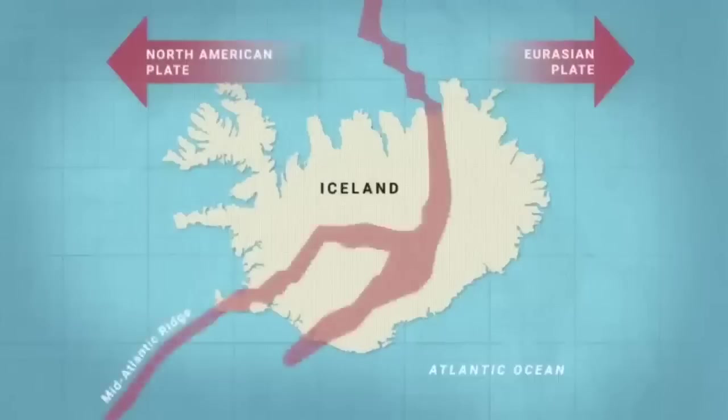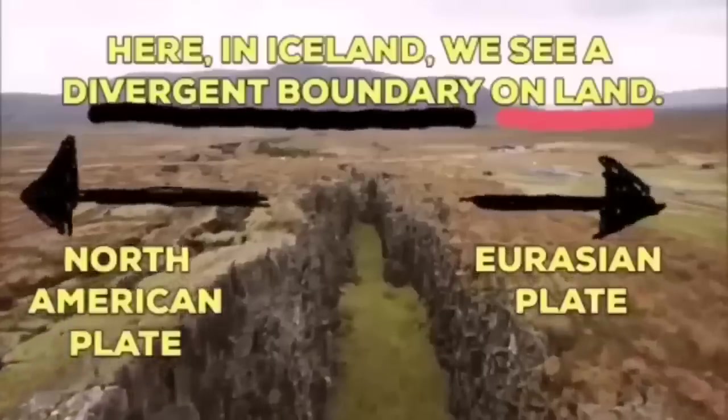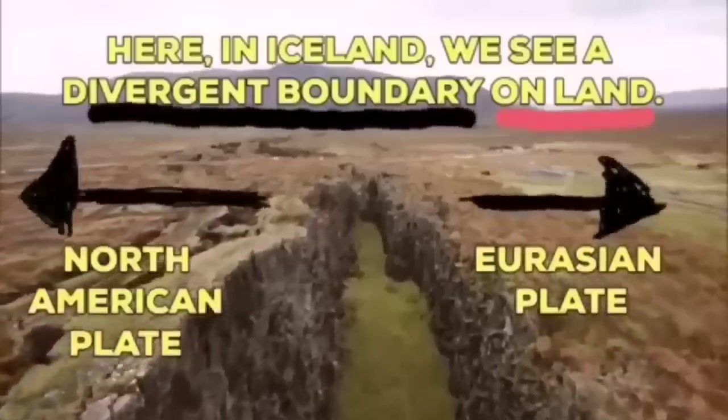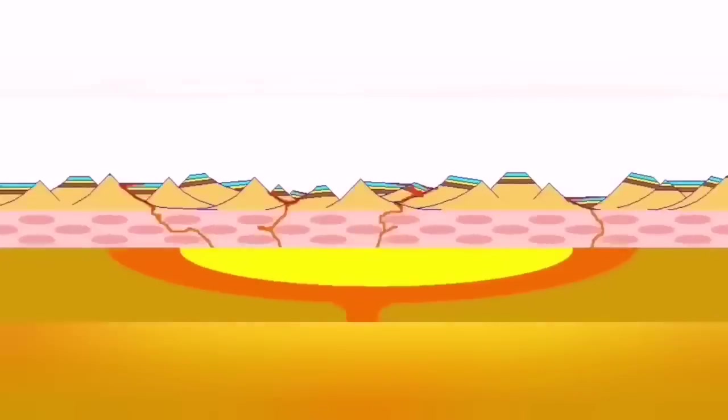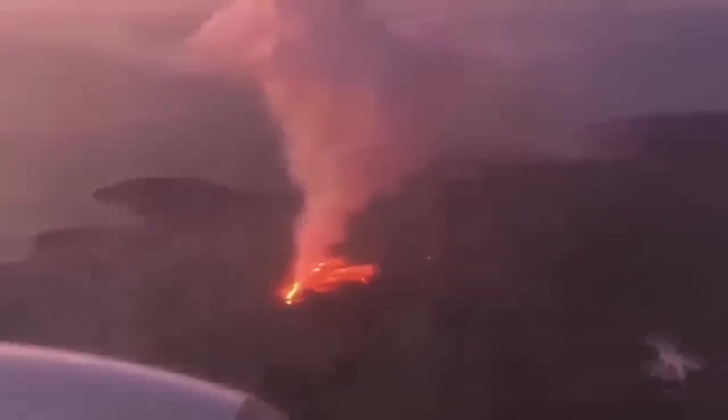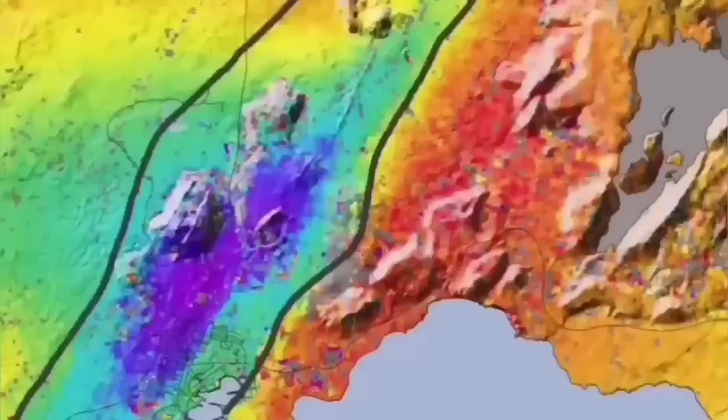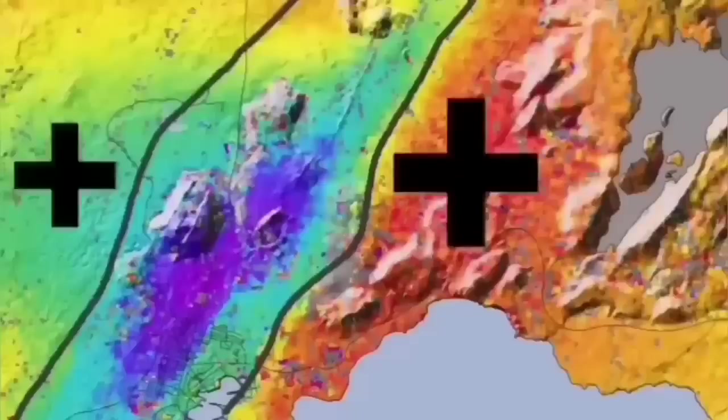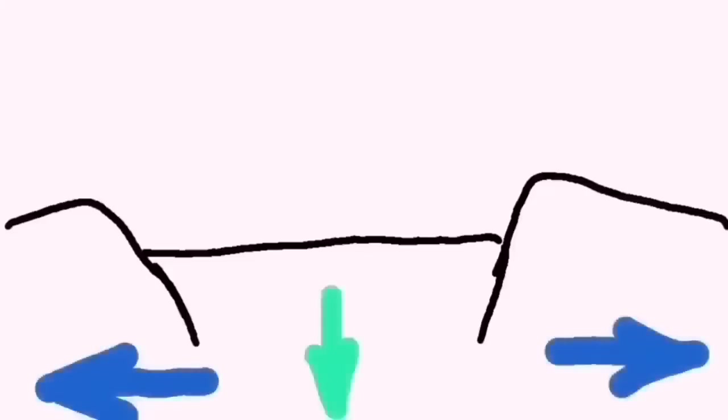Such a thing happens in Iceland on the land. We can see the Eurasian plate and North American plate. Through these grabens, the hollow that you see in the middle, they are separating and through them the magma forms and rises and creates lava eruption of the volcano.